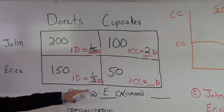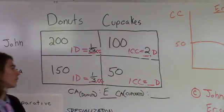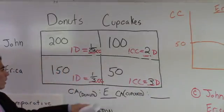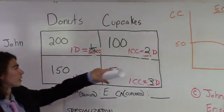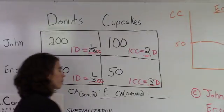And, for Erica, 50 cupcakes, so one cupcake produced, she's going to put the other over, and 150 over 50 is three donuts she's going to have to give up. So, you can see that since John has lower opportunity cost in cupcakes, he has the comparative advantage.